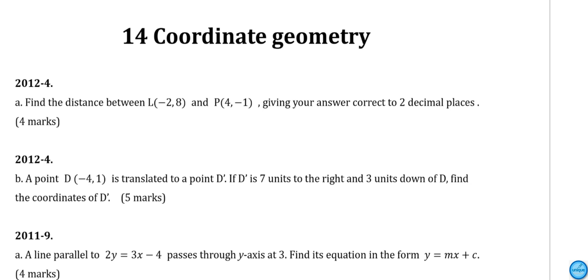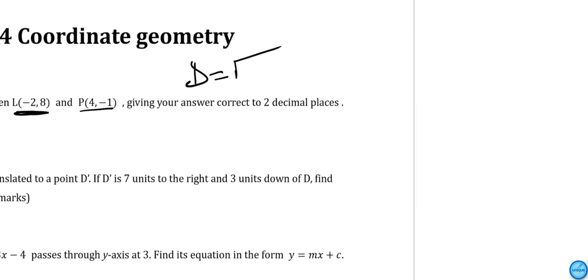At the end we should find the distance between L and B, such as that L is at negative 2. We need to use the formula which we use to find the distance between two points. D is equal to the square root of X2 minus X1 squared plus Y2 minus Y1 squared.